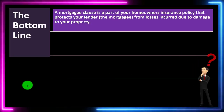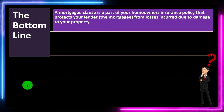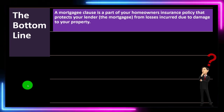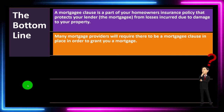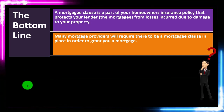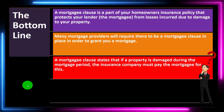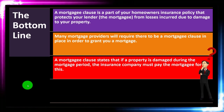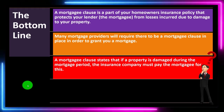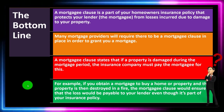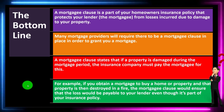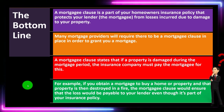The bottom line: the mortgagee clause is a part of your homeowner's insurance policy that protects your lender — the mortgagee — from losses incurred due to damage to your property. Many mortgage providers will require a mortgagee clause in place in order to grant you a mortgage. If the property is damaged during the mortgage period, the insurance company must pay the mortgagee — for example, if your property is destroyed in a fire, the mortgagee clause ensures the loss is payable to your lender, even though it's part of your insurance policy.